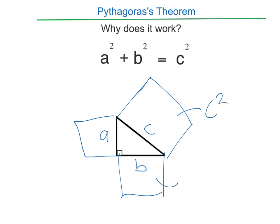The area of this square will be b squared, b times b, and the area of this will be a squared, a times a. And a squared plus b squared has to equal c squared. And that's where this rule, Pythagoras's theorem, comes from.